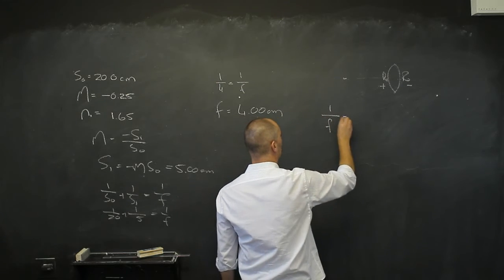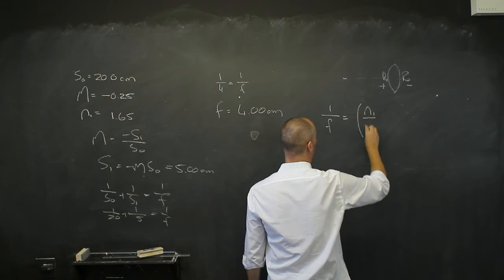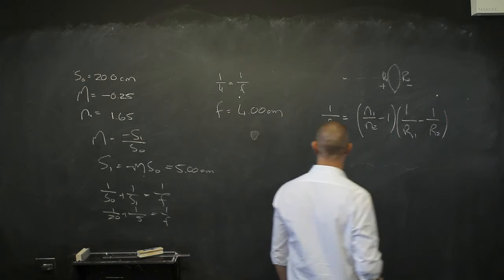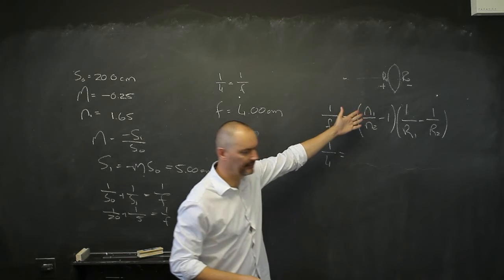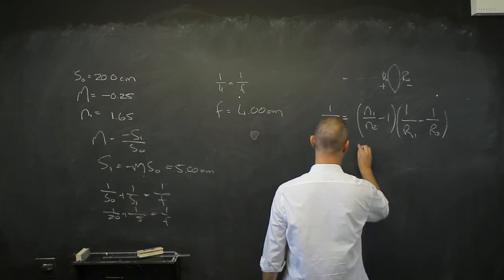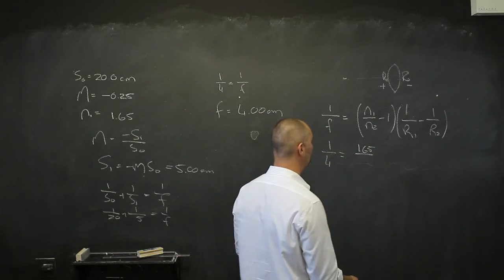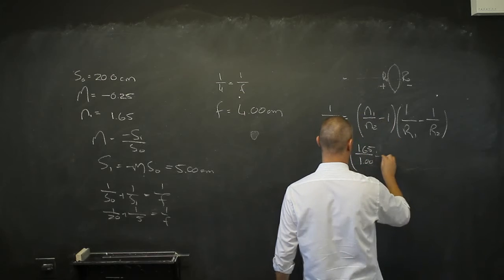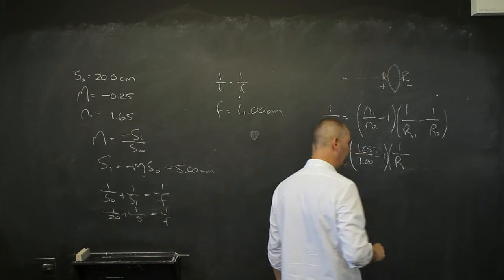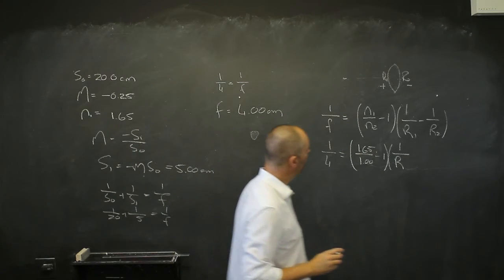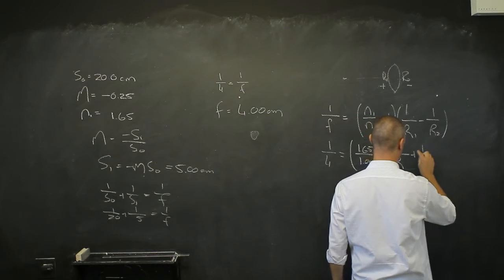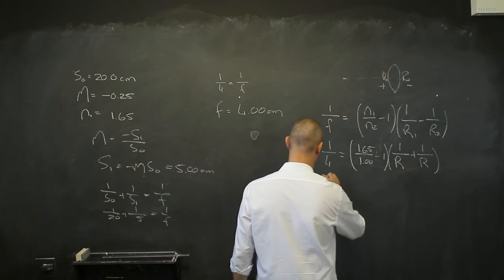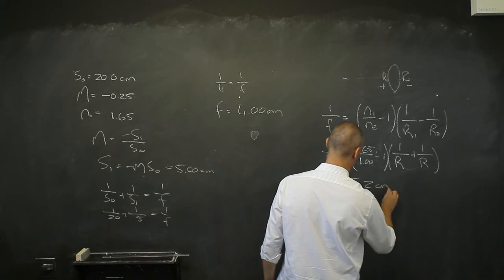So I'm going to have 1 over f, which is 1 over 4, equals (n1 over n2) minus 1, times (1 over r1 minus 1 over r2). The numerator n1 is the refractive index of the lens itself, which is 1.65, over the refractive index of the medium, which is 1.00, minus 1. Now because the lens is symmetric, r1 equals r2 in magnitude, only the sign differs. Since r2 is negative, the two terms become 1 over r plus 1 over r, giving 2 over r. So r is the only unknown, and solving for it gives r equals 5.2 centimeters.